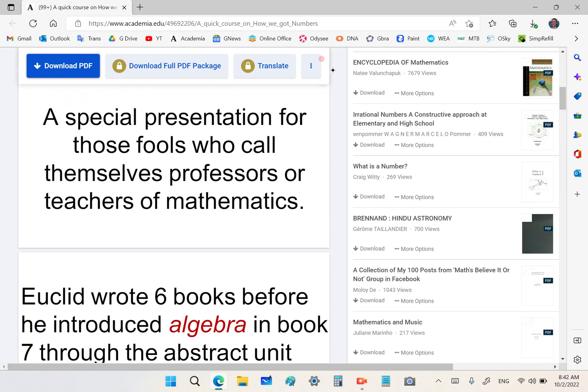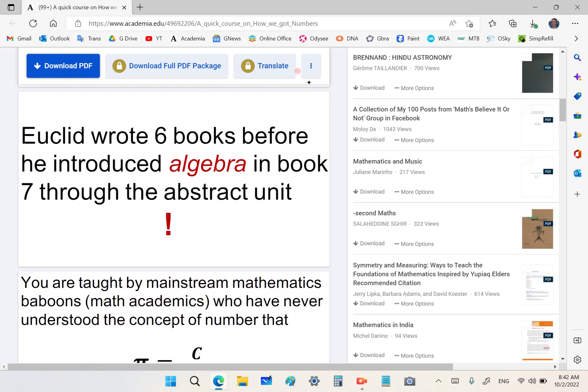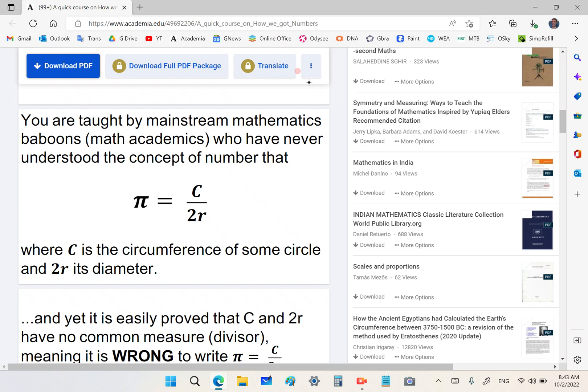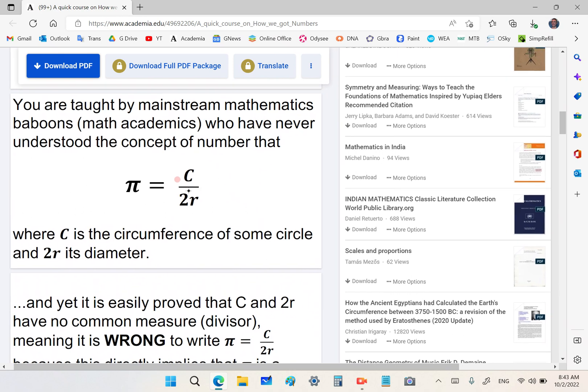Let's do a quick lesson on how we got numbers. Euclid wrote six books before he introduced algebra in book seven through the abstract unit. You are taught by mainstream mathematics academics who have never actually understood the concept of number that the constant pi is equal to the perimeter of the circle over the diameter, where C is the perimeter of the circle and 2R the diameter.